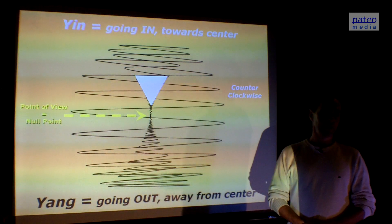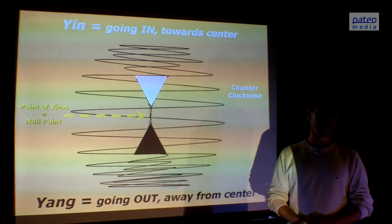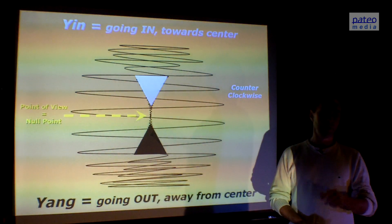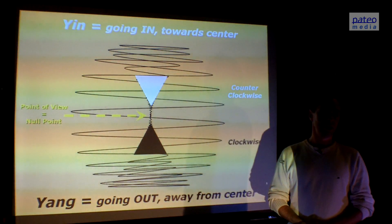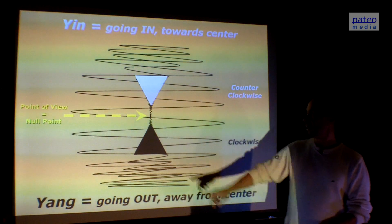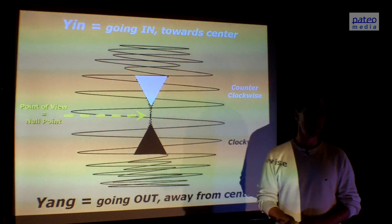On the other side, we see black light going away from us, you could say darkness. And the spiraling energy that's going away is going clockwise. Again, seen from the center of the apple, from the null point.